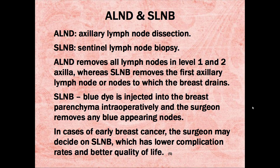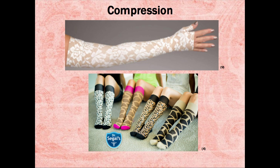With SLNB, blue dye is injected into the breast parenchyma intraoperatively and the surgeon removes any blue appearing nodes. In cases of early breast cancer, the surgeon may decide on SLNB, which has lower complication rates and better quality of life. When patients have had lymph nodes removed, areas of the body may accumulate lymph fluid, especially the extremities, and cause swelling. Many of these patients wear compression sleeves or stockings to slow the lymphedema.